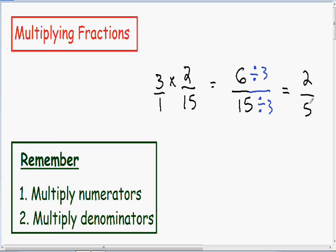And many people like to solve these problems using a simple shortcut. So I'm going to go back and solve this problem using that shortcut where essentially we're just simplifying the diagonals. So let's go back here to where we have 3 over 1 multiplied by 2 over 15.